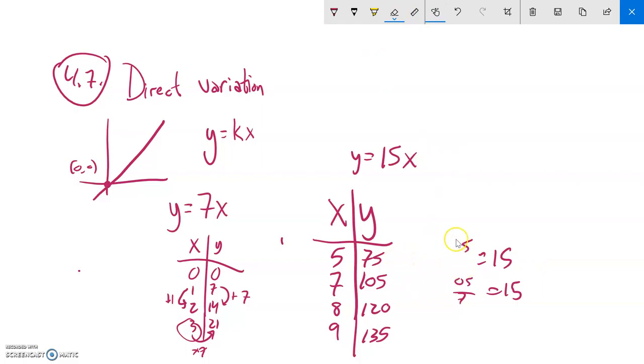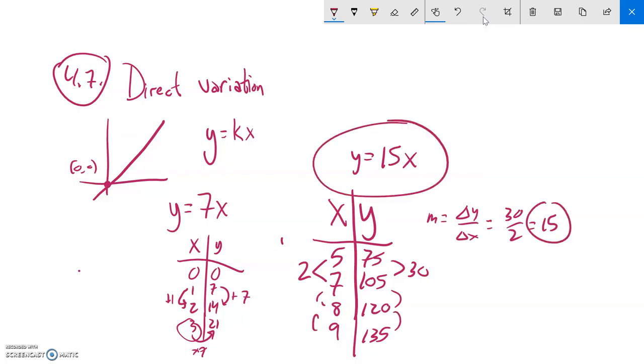If I wanted to analyze it another way, more like the way that we typically analyze these types of tables, these linear tables, I might just go: what's my change in x? It's two. What's my change in y? 105 minus 75 is 30. And remember, slope is change in y over change in x, so that would be 30 over 2, which is 15. If I keep checking and that's constant all the way down, if it always comes out to 15, same idea. So if I have a table, I can write my direct variation like this.